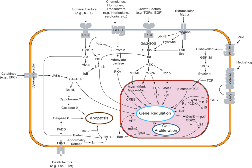In intracrine signaling, once inside the cell, a signaling molecule can bind to intracellular receptors, other elements, or stimulate enzyme activity. The intracrine action of peptide hormones remains a subject of debate. Hydrogen sulfide is produced in small amounts by some cells of the human body and has a number of biological signaling functions. Only two other such gases are currently known to act as signaling molecules in the human body: nitric oxide and carbon monoxide.